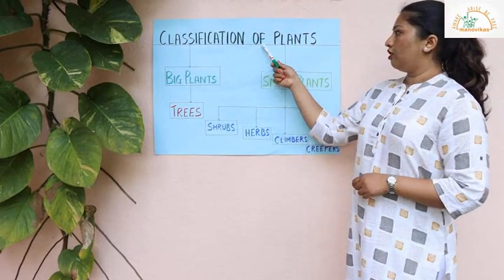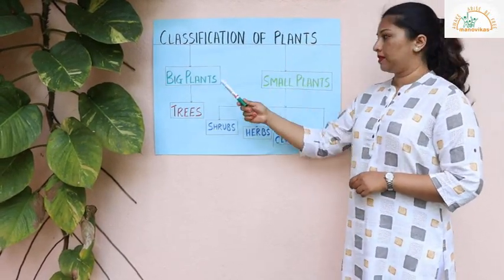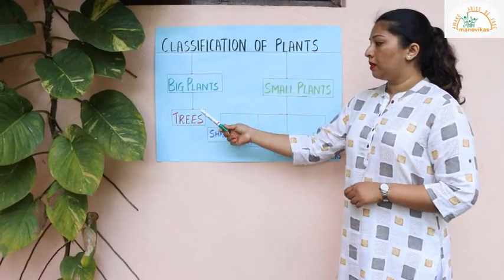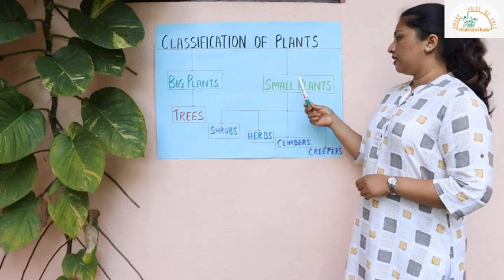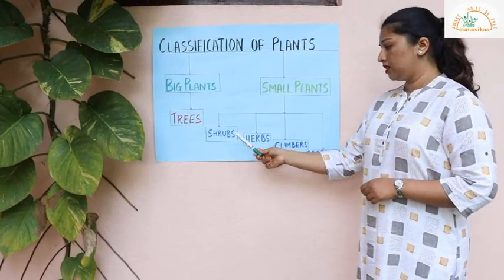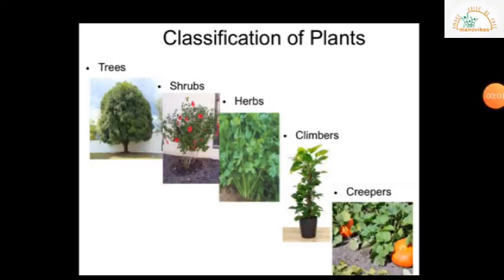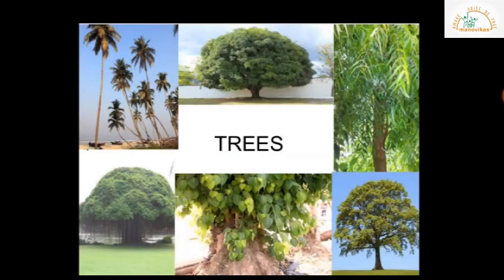Plants are classified into two types: big plants and small plants. Under big plants we will learn about trees, and under small plants we will learn about shrubs, herbs, climbers, and creepers. Plants are classified into five types depending upon their shape, size, and the structure of the stem: trees, shrubs, herbs, climbers, and creepers.